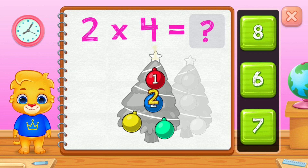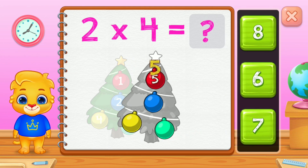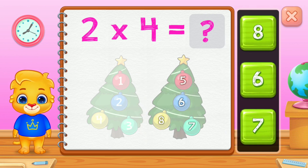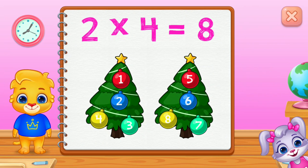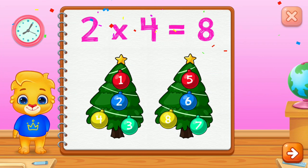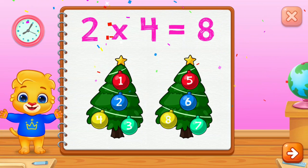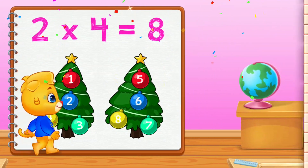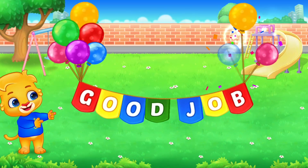One, two, three, four, five, six, seven, eight. Woohoo! Two groups of four equals eight. Good job!